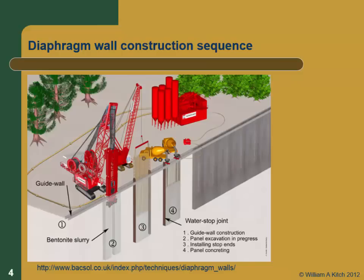These walls are generally excavated in panels. The components include a guide wall — think of it like a set of rails carefully placed so you know exactly where the top of the excavation is, holding equipment in the right location. You excavate a single panel. One method is the hopscotch method, where you excavate every other panel and come back to fill in between. Alternatively, you can excavate one panel next to the previous one in one direction.